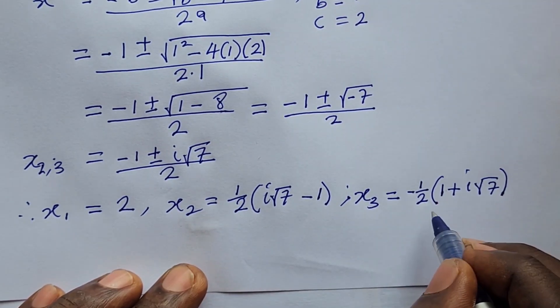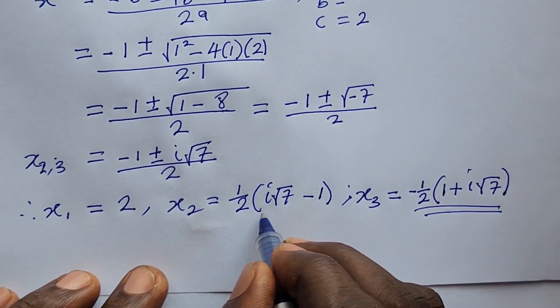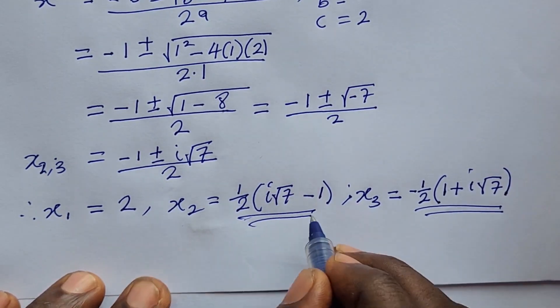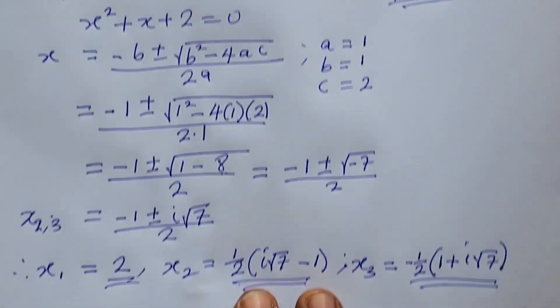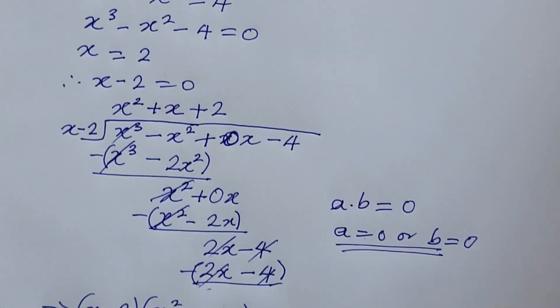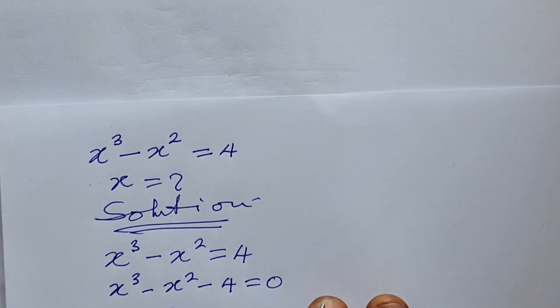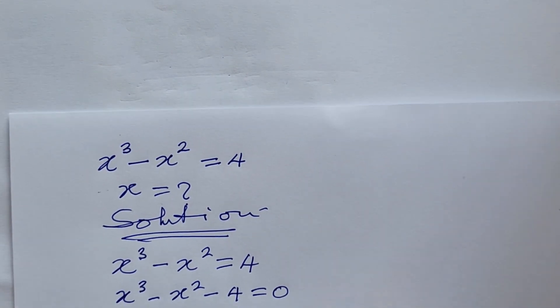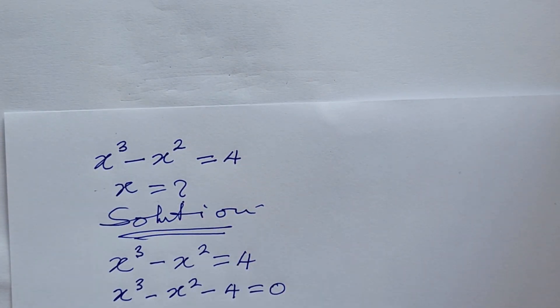Therefore our three solutions are: x₁ equals 2; x₂ equals one-half times the quantity negative 1 plus i root 7; and x₃ equals one-half times the quantity negative 1 minus i root 7. These are all three roots of this third-degree equation.